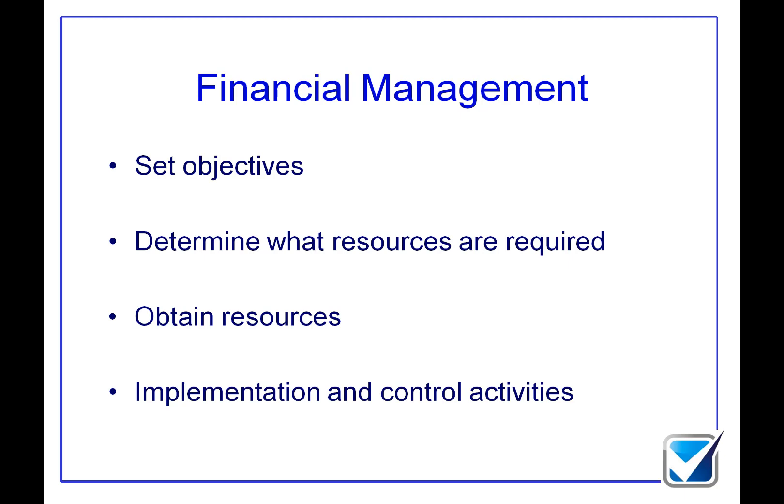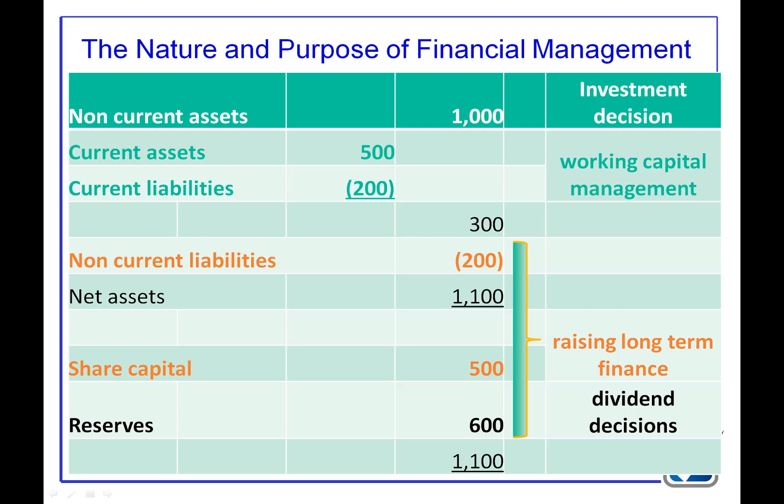If you've taken the FR paper already, what I'm going to cover now will make a lot of sense; if not, think back to your FFA paper. I'm going to look at a statement of financial position to describe what the financial manager actually does. We've got non-current assets, current assets, and current liabilities giving total assets, plus share capital, reserves, and revaluation reserves. The amount of non-current assets will be determined by an investment decision — specifically a net present value decision, covered within this paper. There are entire chapters looking at investment decisions, which could be a 20-mark question or a Section B 10-mark question.